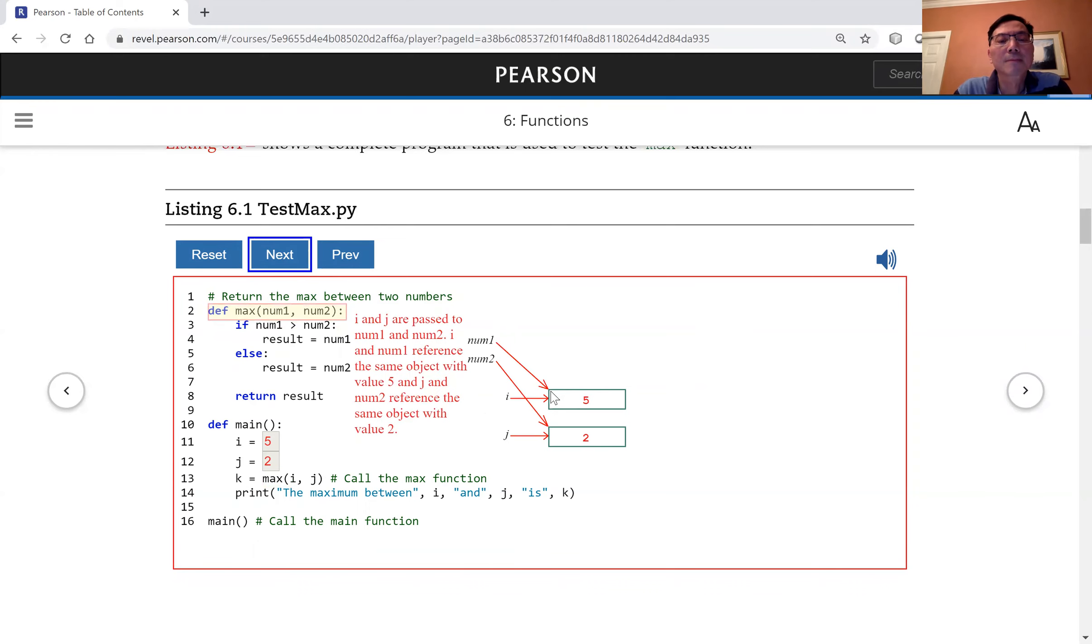i and j are passed to num1 and num2. i and num1 reference the same object with value 5, and j and num2 reference the same object with value 2.